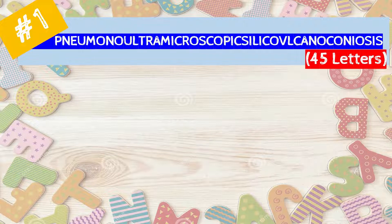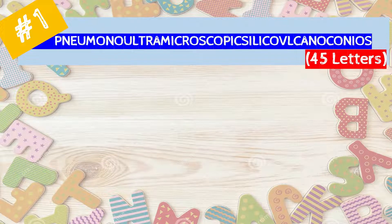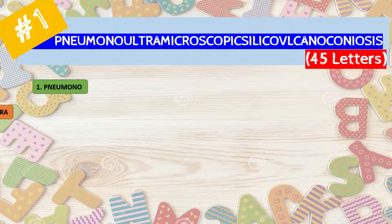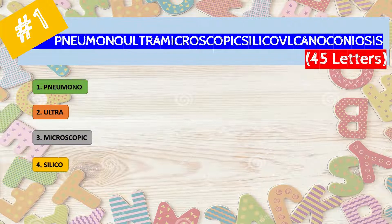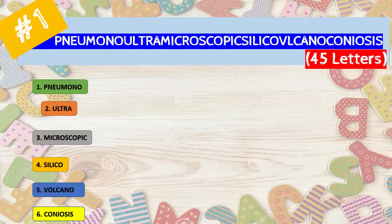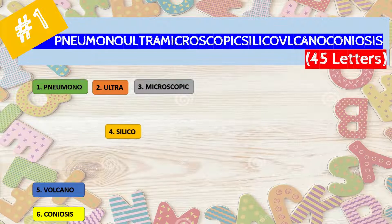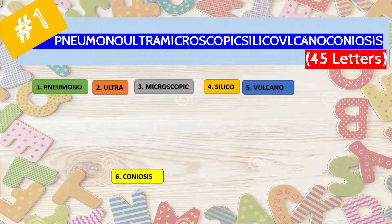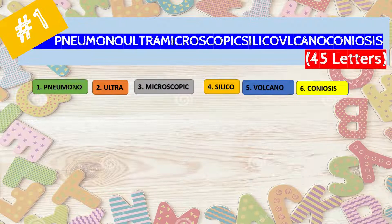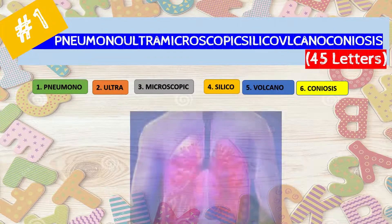Number one is the longest word in the English language that I have come across, and it is a 45-letter word called 'pneumonoultramicroscopicsilicovolcanoconiosis.' We can break it into six different parts to correctly pronounce it: pneumono — ultra — microscopic — silico — volcano — coniosis.